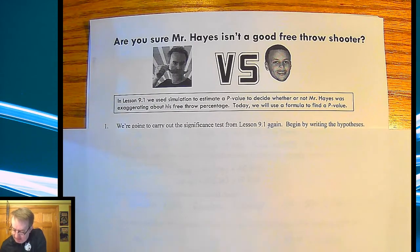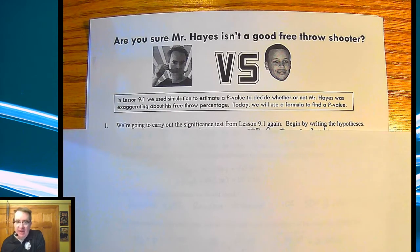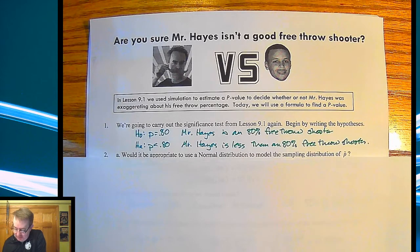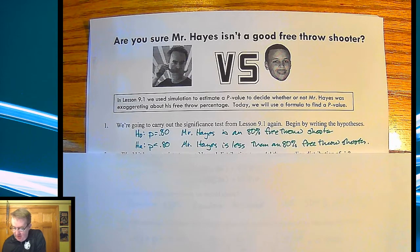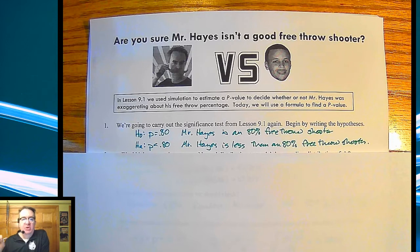So what we're going to do is we're going to do a significance test from lesson 9.1 again. So the hypotheses for this were as follows. The null hypothesis was that my shooting percentage was in fact 80%, so Mr. Hayes is an 80% free throw shooter. And the alternative hypothesis, since I shot I think 64%, is that my true percentage is less than 80%. So I shoot less than 80% free throws.